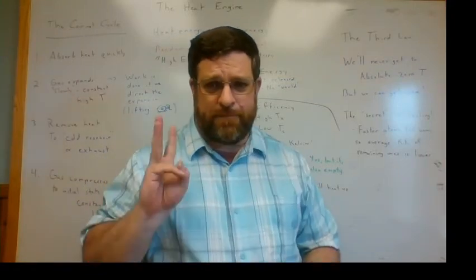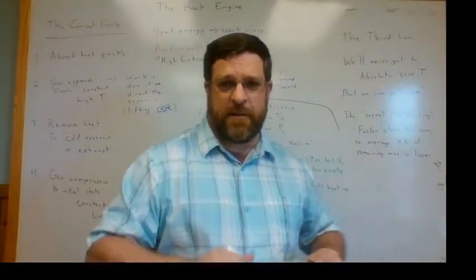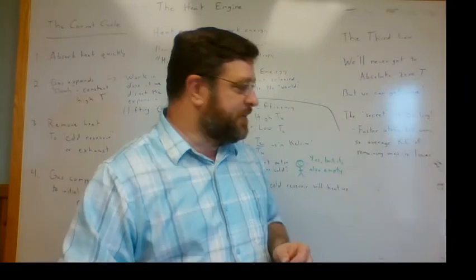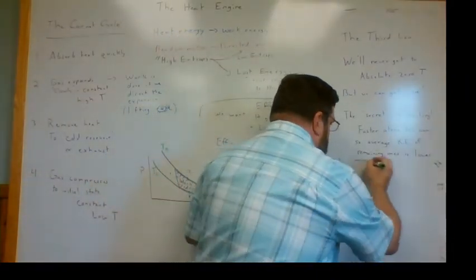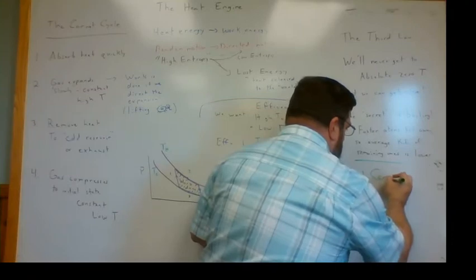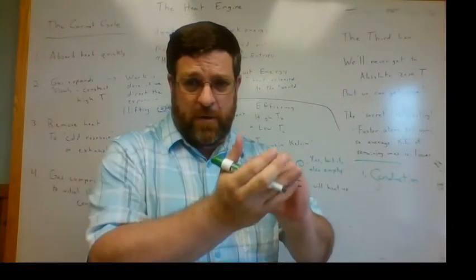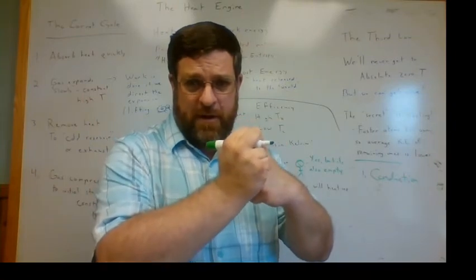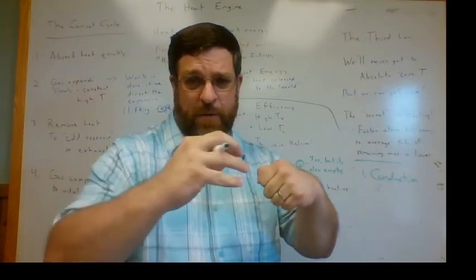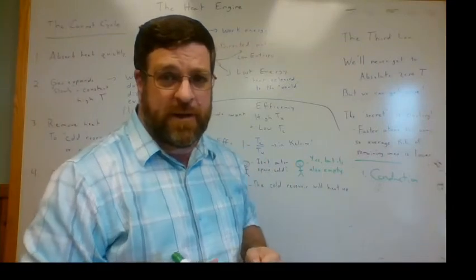But I want to say three last things, and these three last things are the ways that heat can be transferred. The first is by conduction. So if you have two things in contact with each other and they're at different temperatures, the heat just flows from one to the other, and that lowers the temperature.